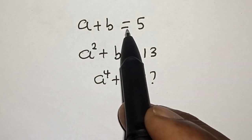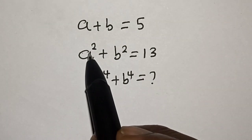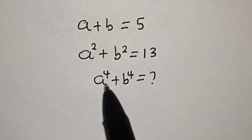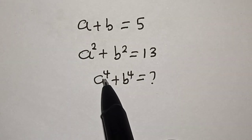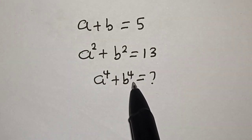a plus b is equal to 5, a squared plus b squared is equal to 13. Then what is the value of a raised to power 4 plus b raised to power 4?